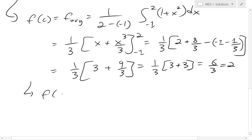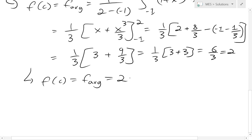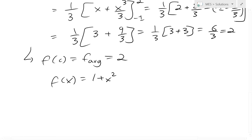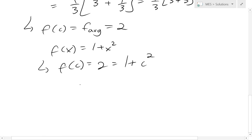So basically we have f(c) equal to f_avg equal to 2. This is by the mean value theorem. So now this equals to, well we know that f(x) = 1 + x². So now we can find the c value, or multiple c values in this case. So we just plug this in, so we get 2 = 1 + c².